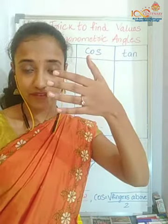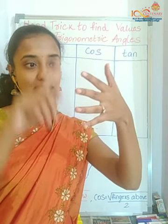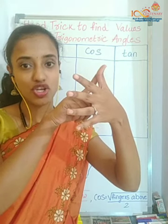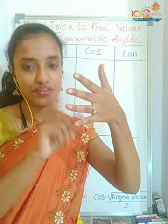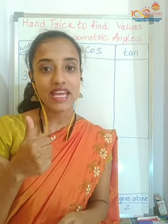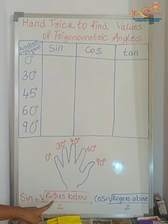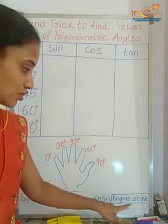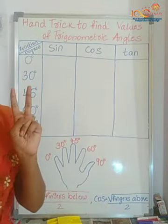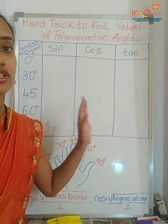Face your left hand towards your face: little finger is 0 degrees, then 30 degrees, 45 degrees, 60 degrees, and the thumb finger is 90 degrees. Now remember two important formulas. One: sine equals root of fingers below divided by two. The other formula: cosine equals root of fingers above divided by two. These are the two important formulas needed to find all the values of sine, cos, and tan.